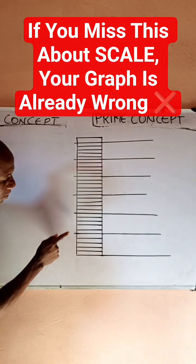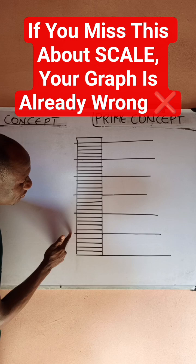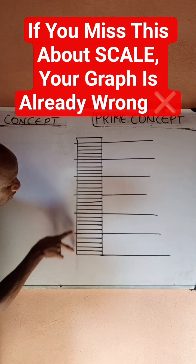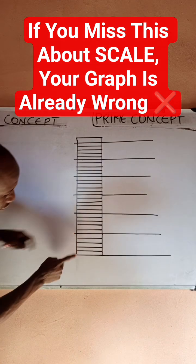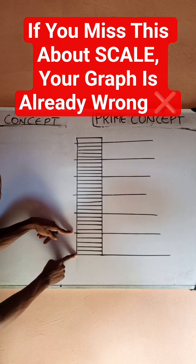When you want to plot a graph, you'll notice on your graph sheet you have boxes like this, small boxes. Now, the standard is that each of these boxes from this point to this point is supposed to be a length of one centimeter.